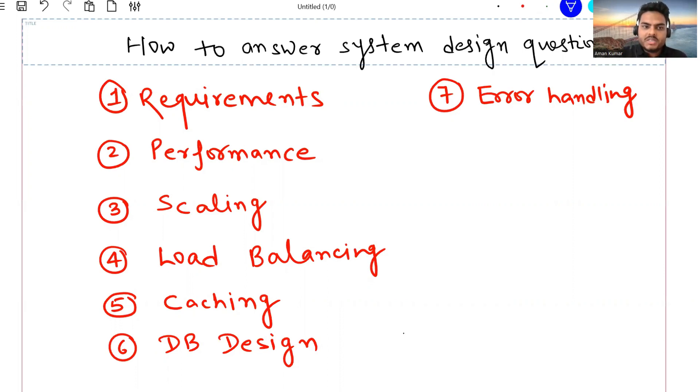You need to focus on these seven points when somebody asks you a system design question or they want to check your approach on that: Requirements, performance, scaling, load balancing, caching, DB design and error handling.